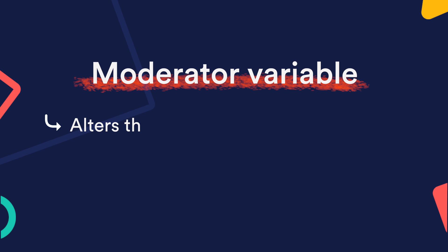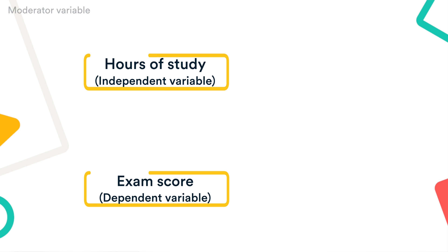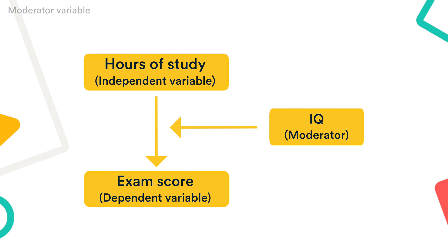A moderator alters the effect that an independent variable has on a dependent variable. For example, the variable IQ moderates the effect that the number of study hours has on the exam score. In other words, the higher your IQ, the fewer hours of study you must put in to do well on the exam.